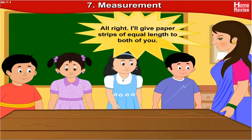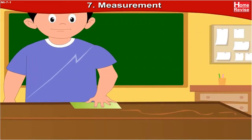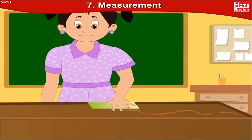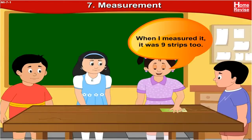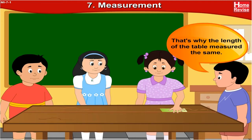Alright, I will give paper strips of equal length to both of you. Use them to measure this length. The length of the table is 9 of these strips. But when I measured it, it was 9 strips too. The strips you gave us were of equal length, that's why the length of the table measured the same.